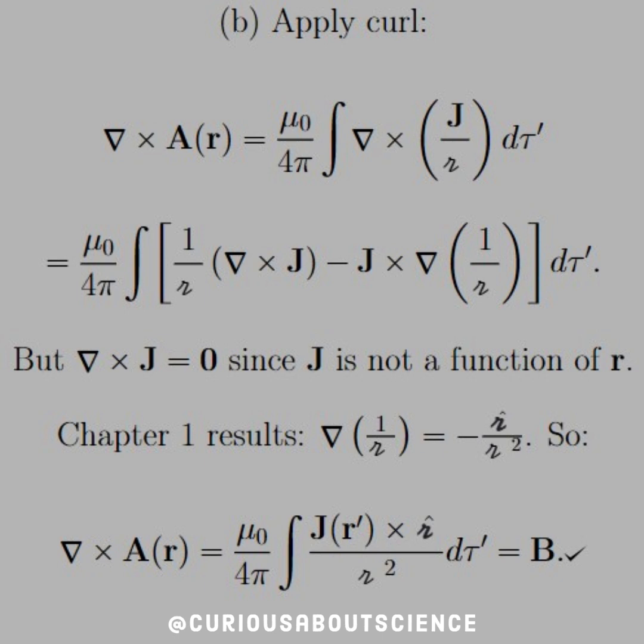Okay, so then substituting that in, we see here that we have exactly what we expected. Mu naught over 4 pi integral j cross r hat over r squared d tau squared, which is exactly what the integral for the magnetic field was. So that checks out.